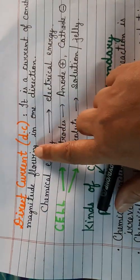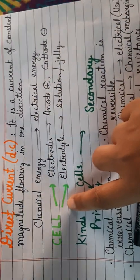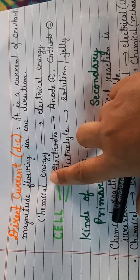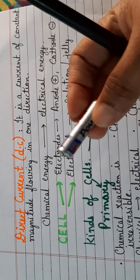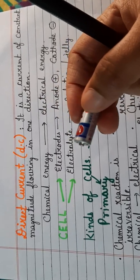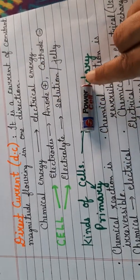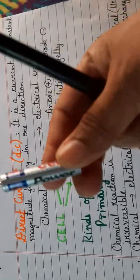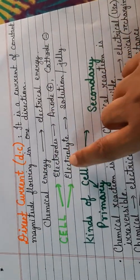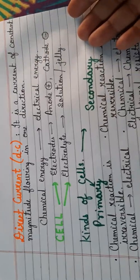In a cell, chemical energy is converted to electrical energy. Inside a cell there are different chemicals covered by a metallic case. It has two electrodes: the positive electrode called the anode and the negative electrode called the cathode. Some cells are dry cells, while others have electrolyte filled in the form of a solution or a jelly.